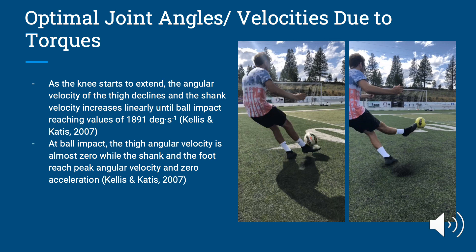The picture on the left shows right as ball contact is made, and the picture on the right shows the follow-through. The thigh is in the same spot, but the shank has continued to move. At ball impact, the thigh angular velocity is almost zero, which is why you see the thigh in the same spot. The shank and foot reach peak angular velocity and zero acceleration, meaning the velocity is remaining constant — the foot doesn't stop, but the velocity is not changing over time.